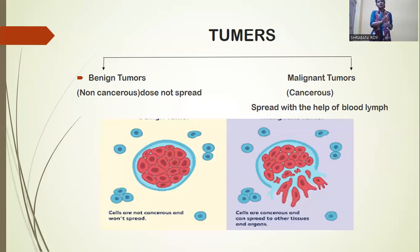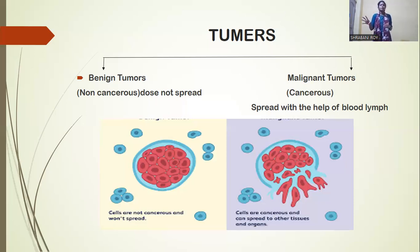Benign tumors do not spread throughout the body, but in the case of malignant tumors, this type of tumor spreads through the bloodstream.